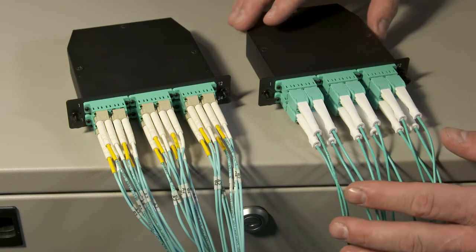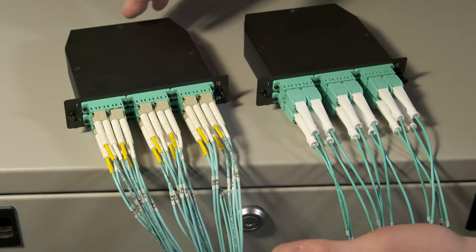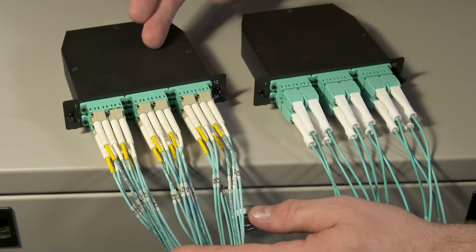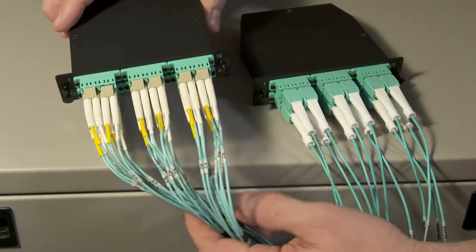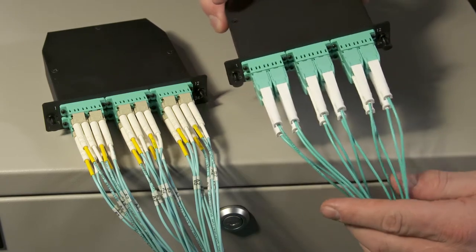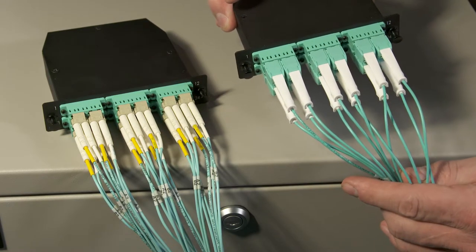What I have here is two fully populated MTP cassettes, each with 12 LC fiber cables installed. On the left, the MTP cassette has your typical traditional fiber cable assembly. On the right, the MTP cassette has our new premium fiber cables installed.